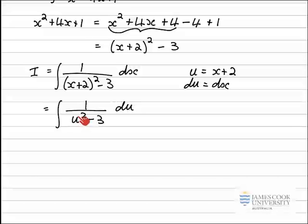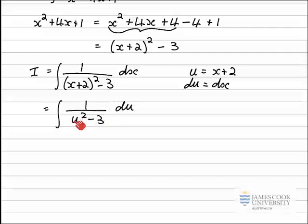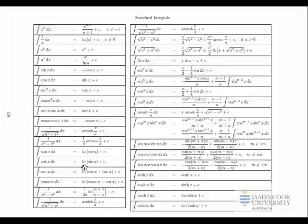So I should be able to recognize this integral as one that's on the standard integral table. Or I might be able to integrate this by splitting it up into partial fractions, writing this as the difference of two squares — u squared minus the square root of 3 all squared — and using partial fractions. We'll look at both methods here, but first of all, let's see if this one is on the table of integrals.